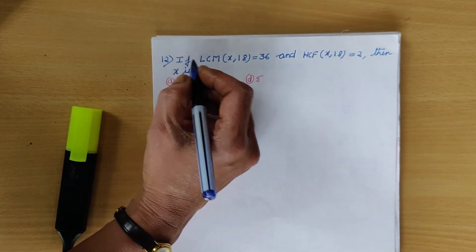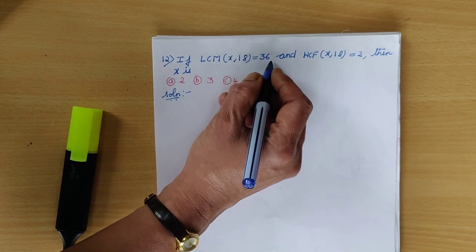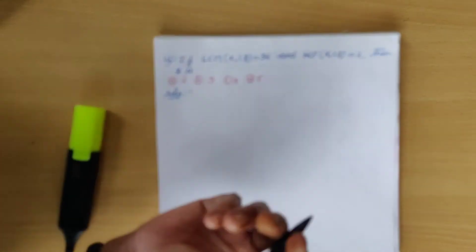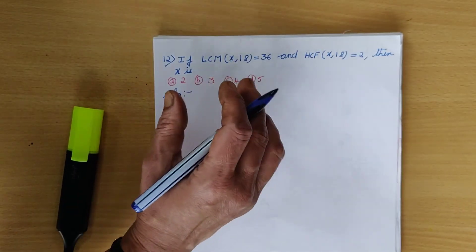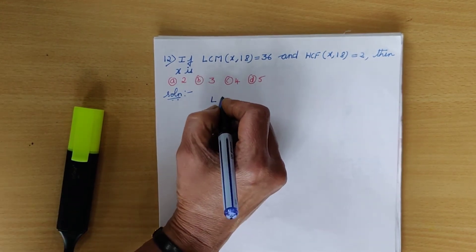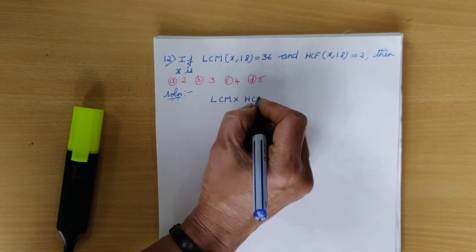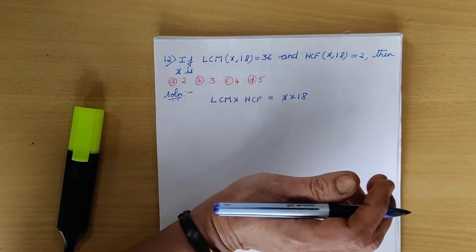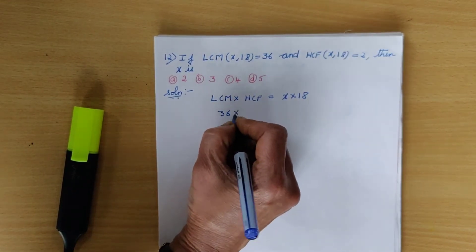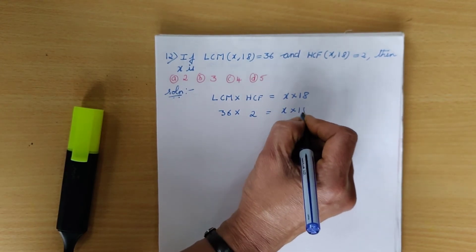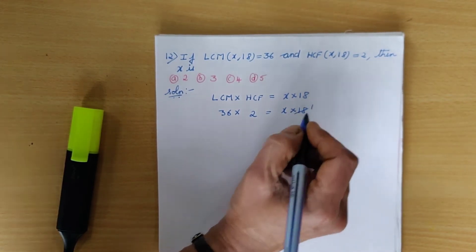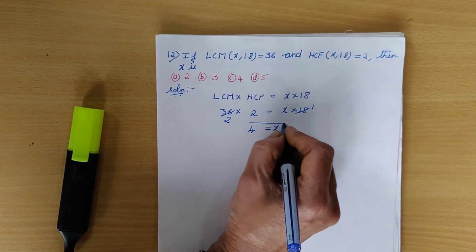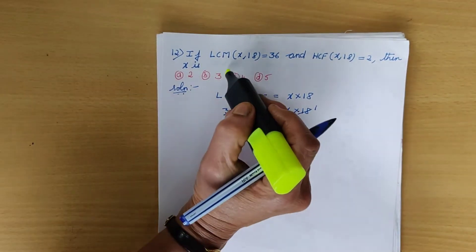Twelfth question: LCM(x, 18) = 36 and HCF(x, 18) = 2. Using the relation LCM × HCF = product of the two numbers: 36 × 2 = x × 18, so 72 = 18x, therefore x = 4. The correct option is C.